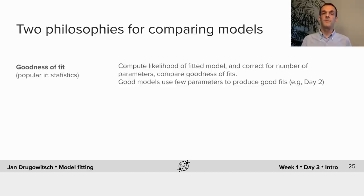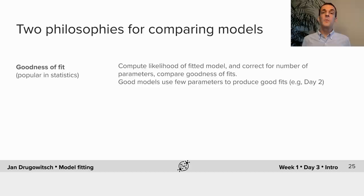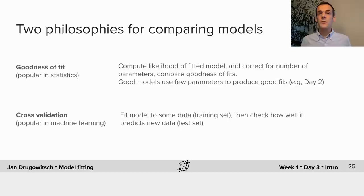As for model fitting, there are also two philosophies for model comparison. The first is to compare them by goodness of fit — a very popular method in statistics and the most common method used in neuroscience. This method is based on computing the likelihood of the fitted model and then correcting for the number of parameters used as a proxy for model complexity, resulting in a measure of goodness of fit. The idea is that a good model uses few parameters to produce good fits. The second philosophy is to use cross-validation, which is very popular in machine learning but less used in neuroscience, and is based on fitting the model to some data and then checking how well it predicts a new dataset that hasn't been used to fit the model.